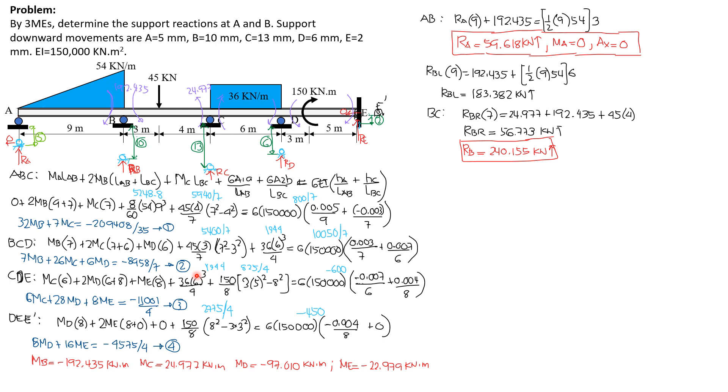Then we write 3 moment equation on CDE. We have moment at C times LCD 6 plus twice moment at D, quantity 6 plus 8, then plus moment at E times 8, plus 6 area 1A over L1, which is the value of this with respect to C is WL cube over 4, and that's 1944. Then plus the value of 6 area 2B over L2 for this part is, since it is clockwise, moment over L, the formula is moment over L, 150 over L, quantity 3B square minus L square. So 3 times 5 square, the distance of the couple from the right is 5, so 3B square minus L square.